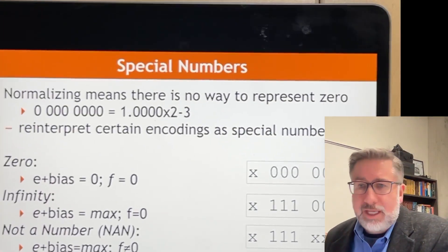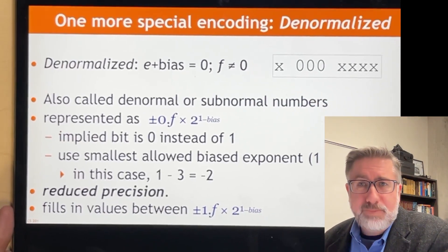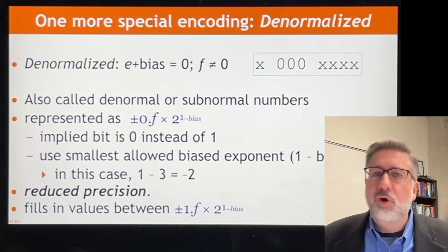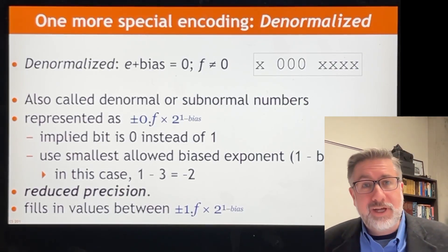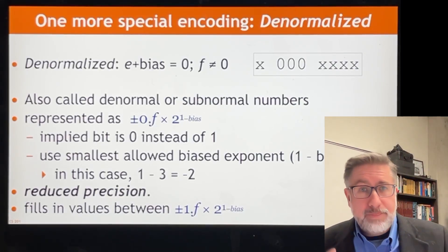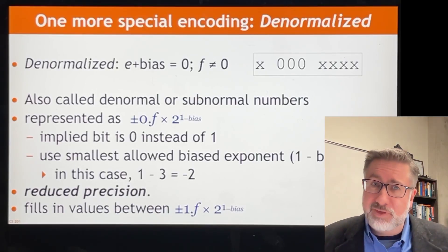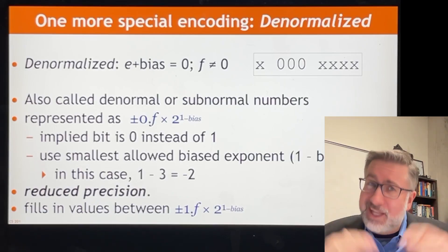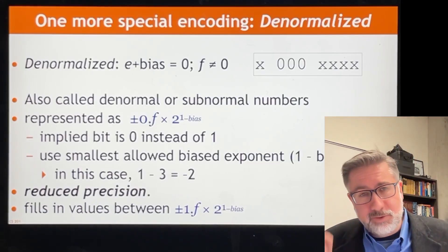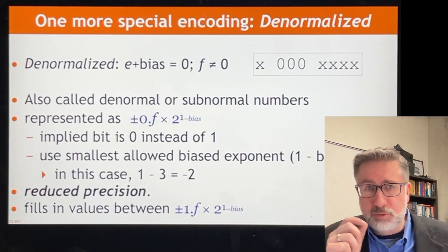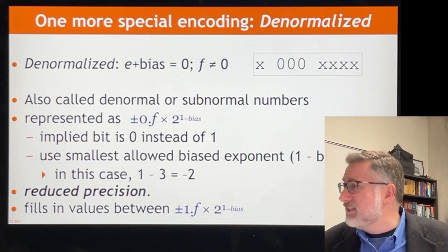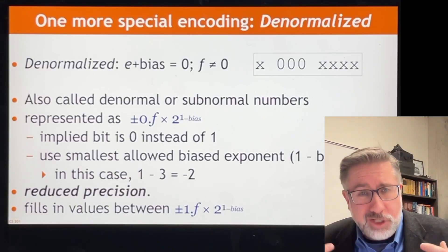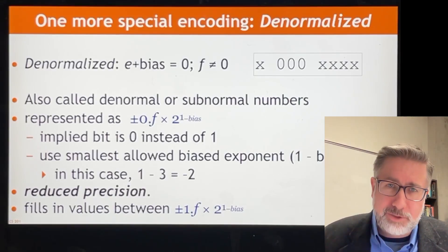This last number is for a special purpose number called denormalized, or subnormal, or denormal. As the name implies, we are going to use zero point something for the significand instead of one point something. They are not normal — they are denormal, they are less than normal. Normalized numbers are one point something; these are zero point something. This is an attempt to squeeze out just a tiny little bit more resolution into the floating-point representation.